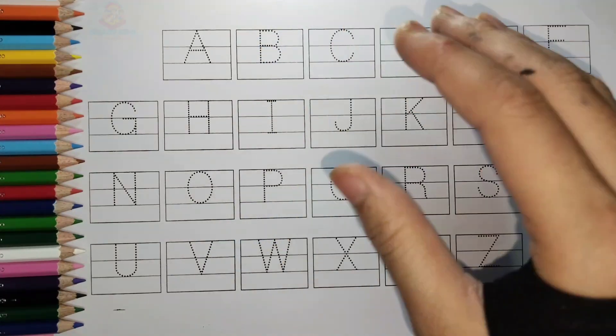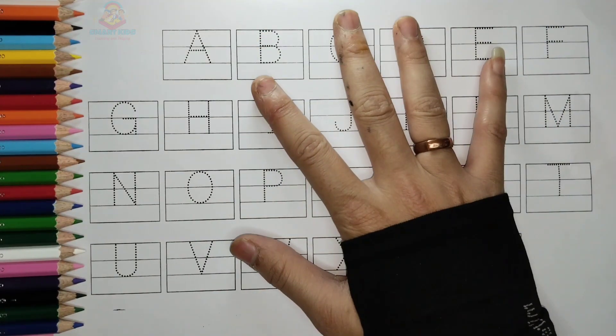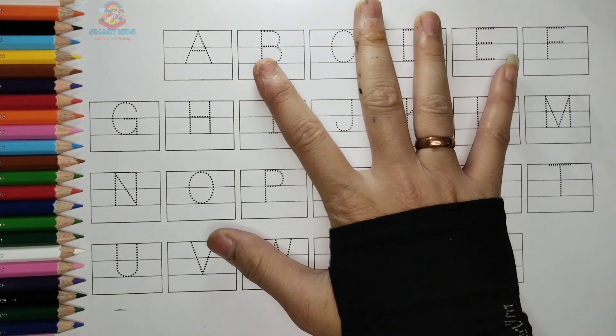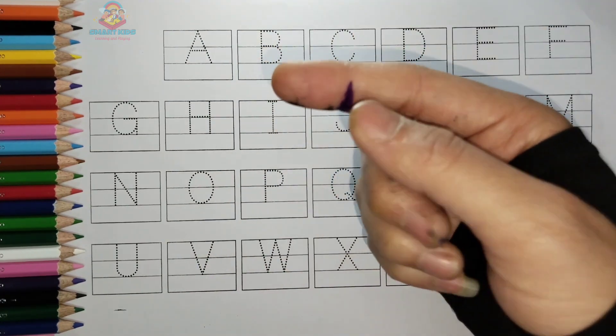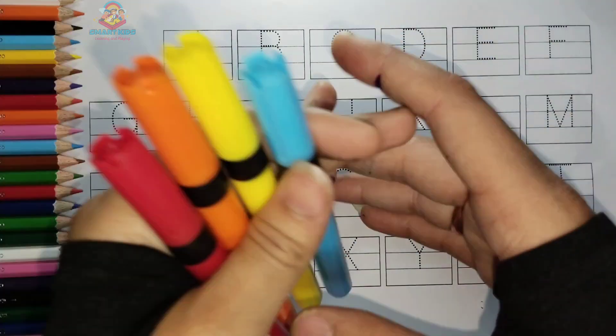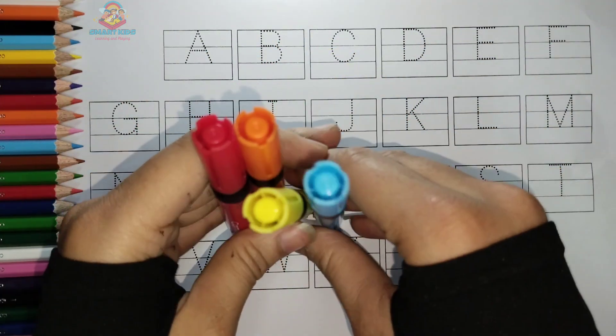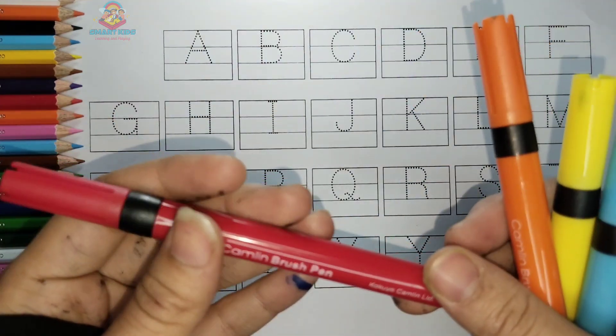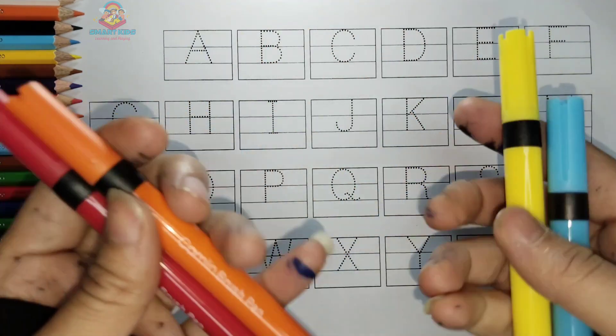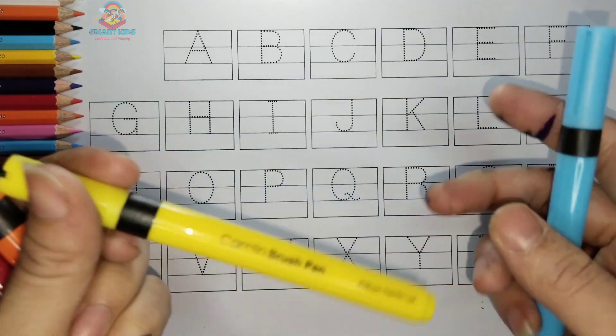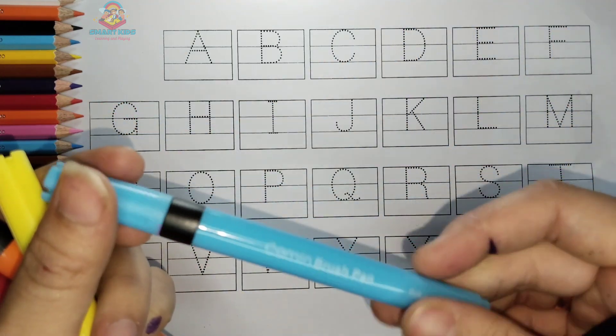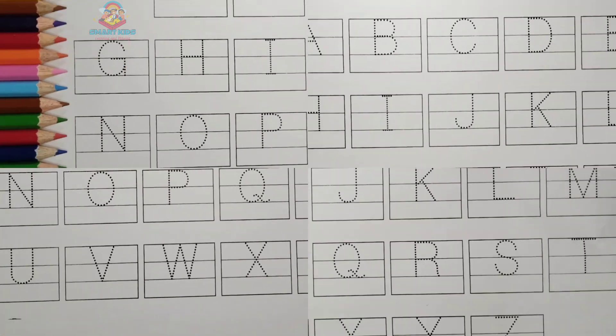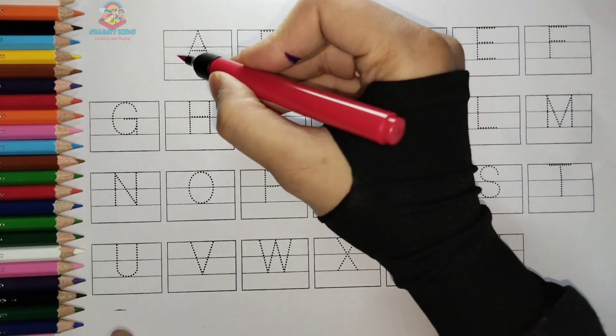Hello kids, welcome back to Smart Kids A to Z. Today we will learn alphabets, so select the colors. Colors are selected: red color, orange color, yellow color, and sky blue color. So let's start the ABC.